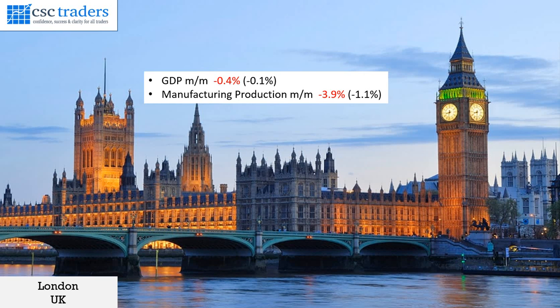Let's have a look at what's happened in the markets overnight. The only data to come out was from the UK. We saw GDP numbers missed the mark at negative 0.4% and the manufacturing production number at minus 3.9%, which also missed the mark. The UK had another down day, dropping around 70-odd pips for the session, slightly impacted by this data.